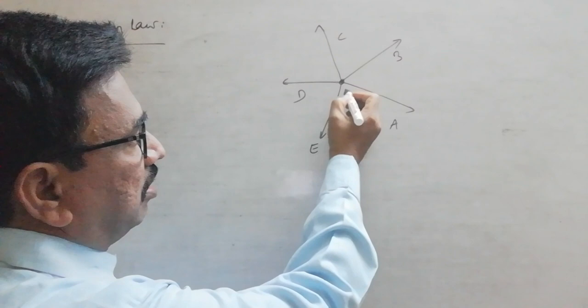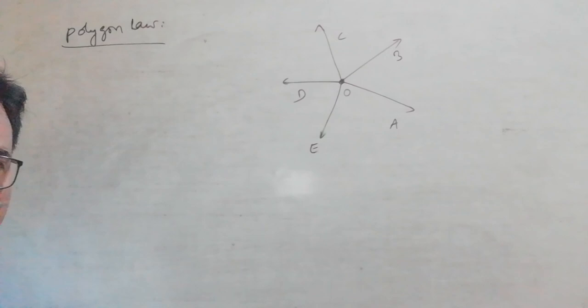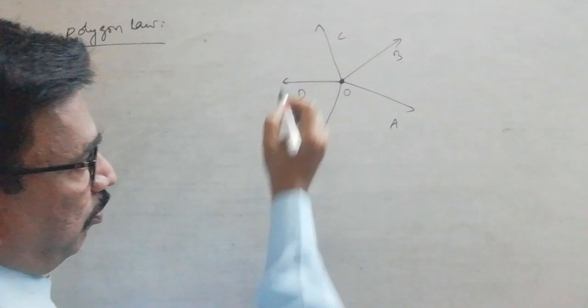Now, in order to find out the resultant of these vectors, as per the statement of polygon law: a number of vectors acting simultaneously at a point are represented in magnitude and direction by the sides of a polygon taken in order.